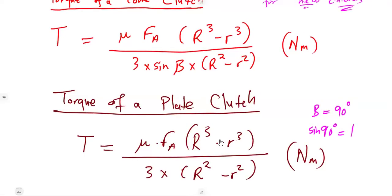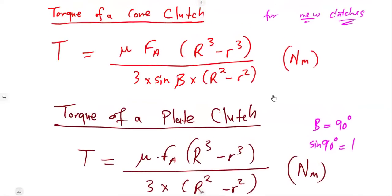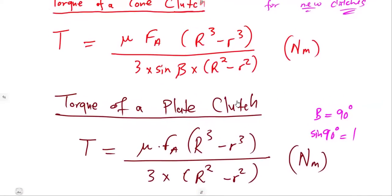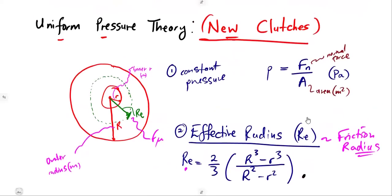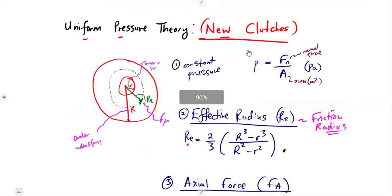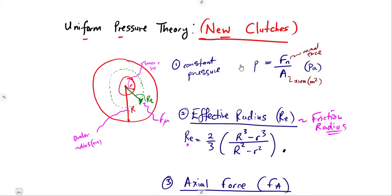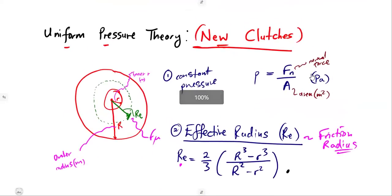Everything remains the same — the outer radius and inner radius are unchanged. Use these formulas whenever you are working under uniform pressure theory, that is, with new clutches. In the next class we will work with examples. Make sure you join the membership so you do not miss any class.